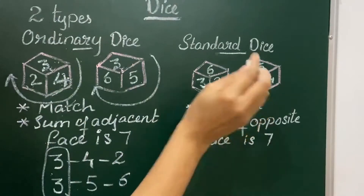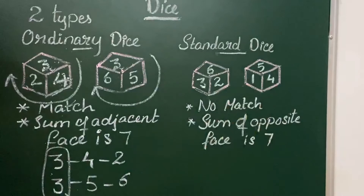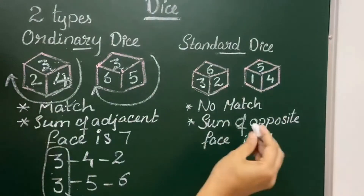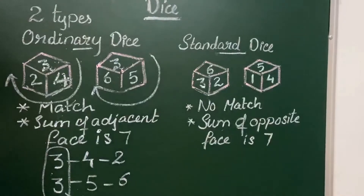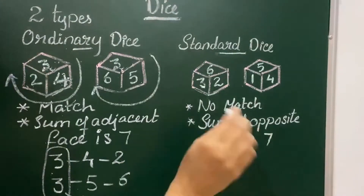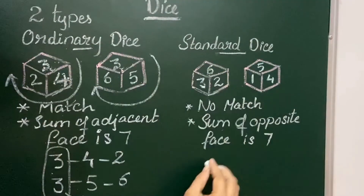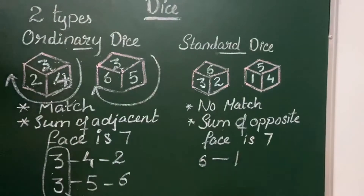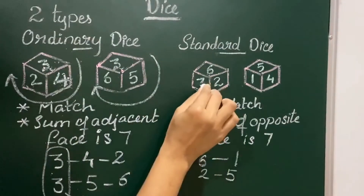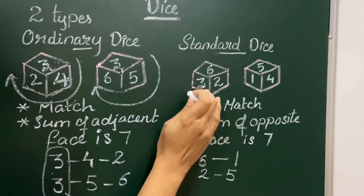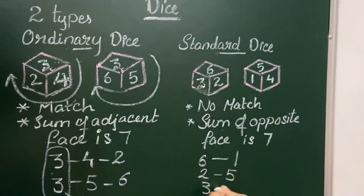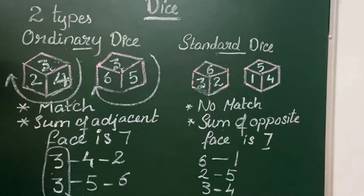For standard dice, there won't be a match, so the sum of the opposite face is 7. It's simple to tell the opposite face. Here, 6's opposite: 6 plus 1 is 7, so opposite of 6 is 1. Opposite of 2: 2 plus 5 is 7, so opposite of 2 is 5. Opposite of 3: 3 plus 4 is 7, so opposite of 3 is 4. As we know the sum of opposite faces is 7, we can tell the opposite easily.